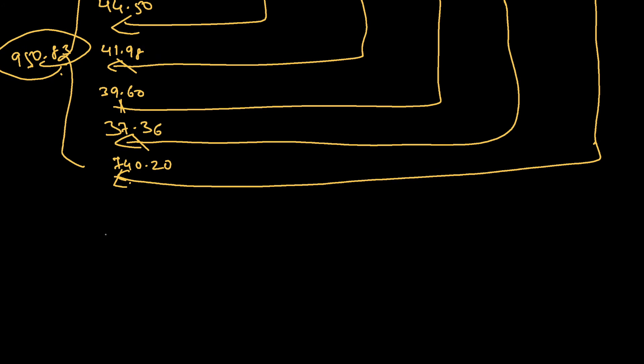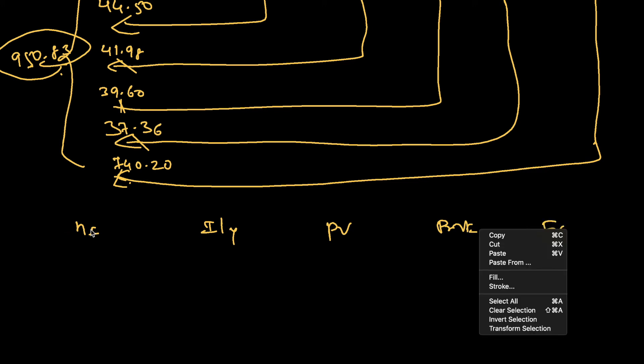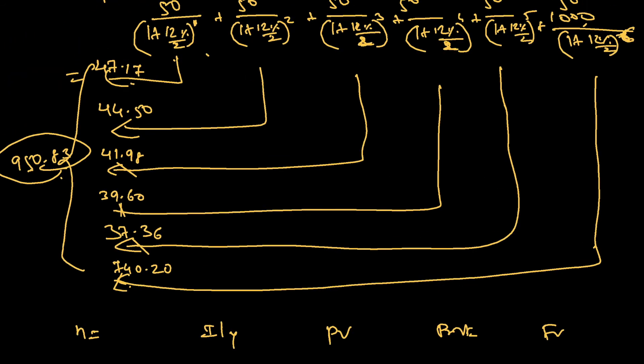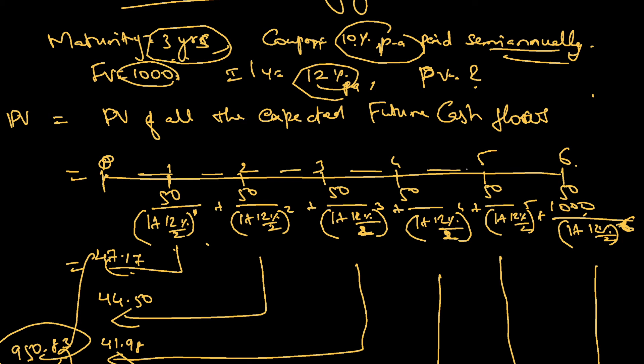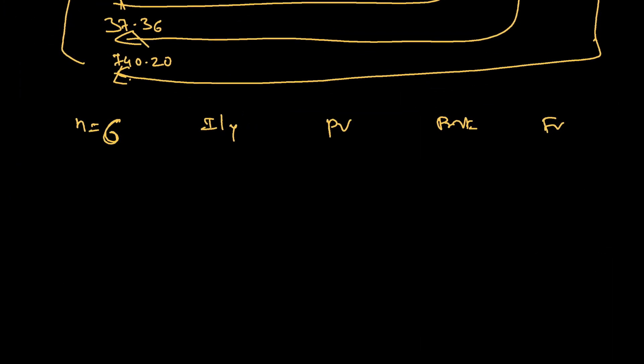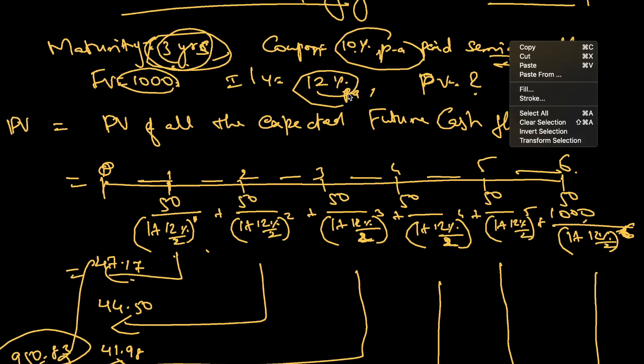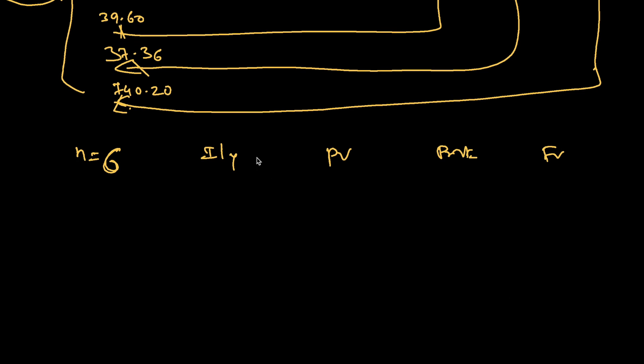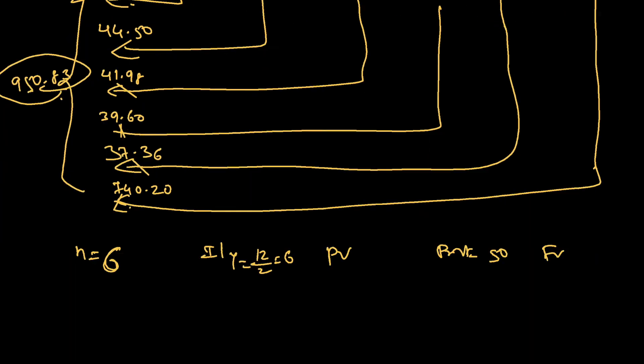With calculator: n is number of periods, i/y, present value, payment, and future value. Number of periods is six (even though maturity is three years, because it is semi-annual it becomes six periods). Interest per year is 12 percentage, but because this is semi-annual I'll do 12 divided by 2, that is equal to 6. i/y is equal to 6. Payment is 50 and future value is 1000.